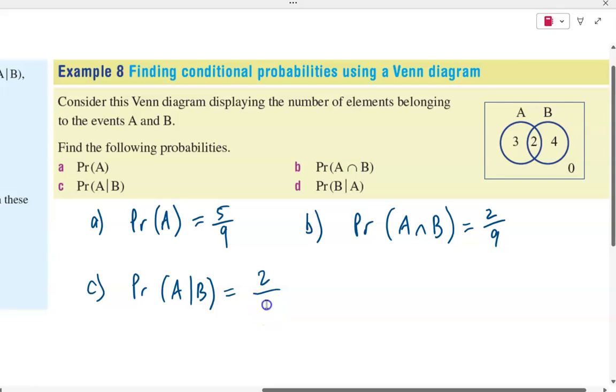which in this case is two. The number on the denominator is not nine in this case. It is the number for event B in total. So I'm going to add the two values here, four and two, because they are both showing me totals for event B. So it's two over six, or I can simplify that to one over three.